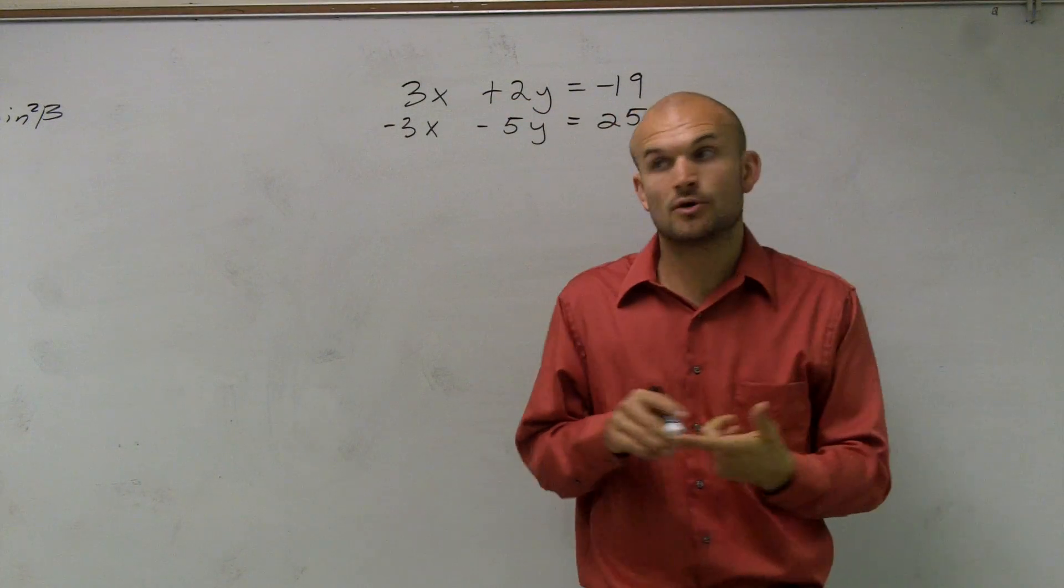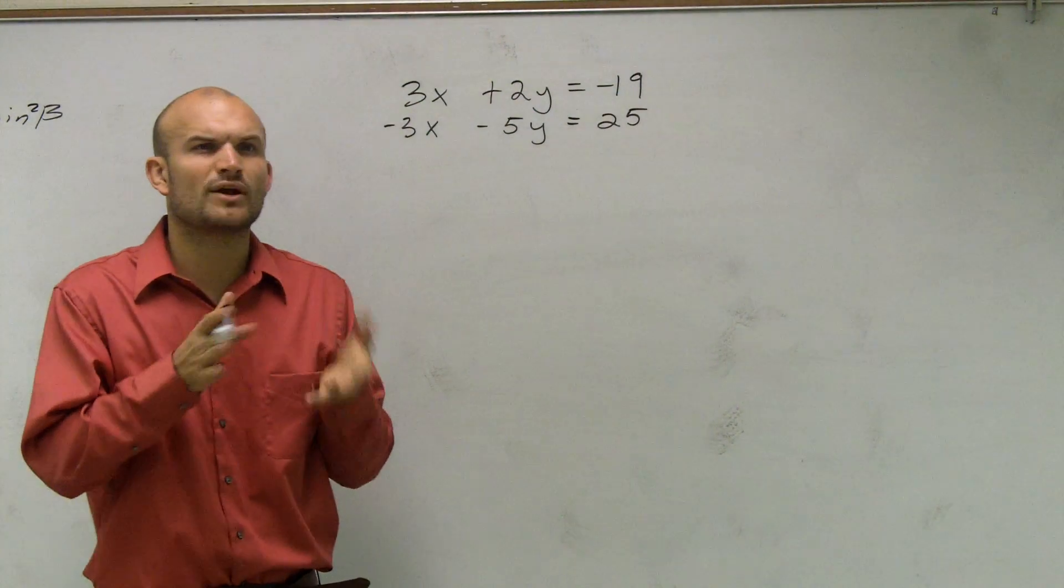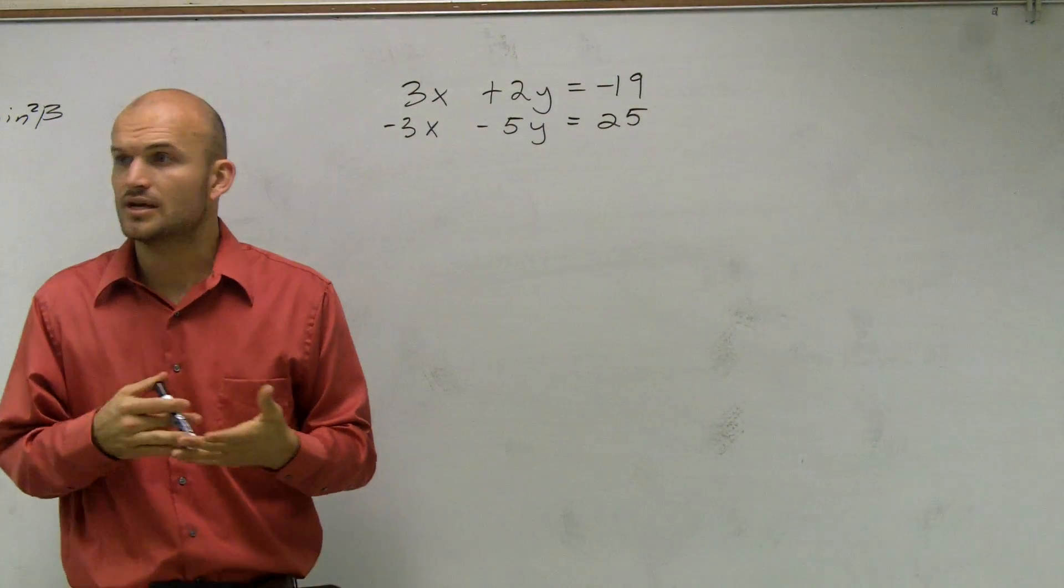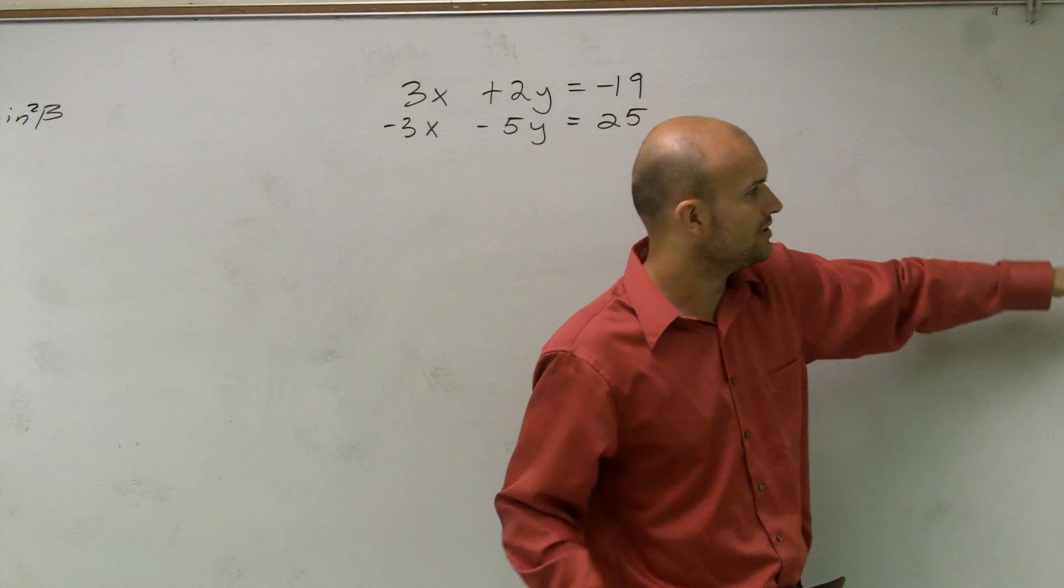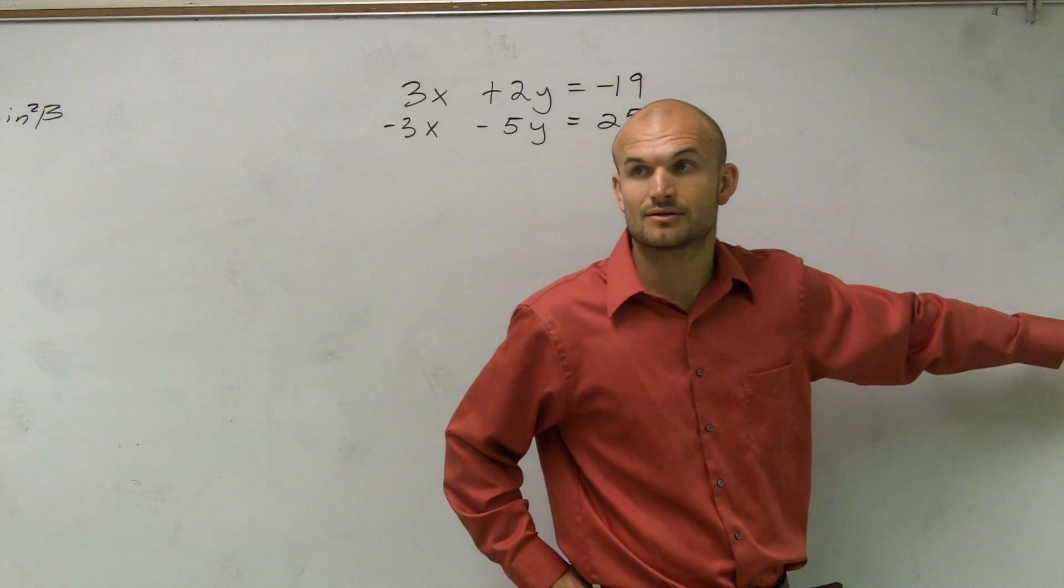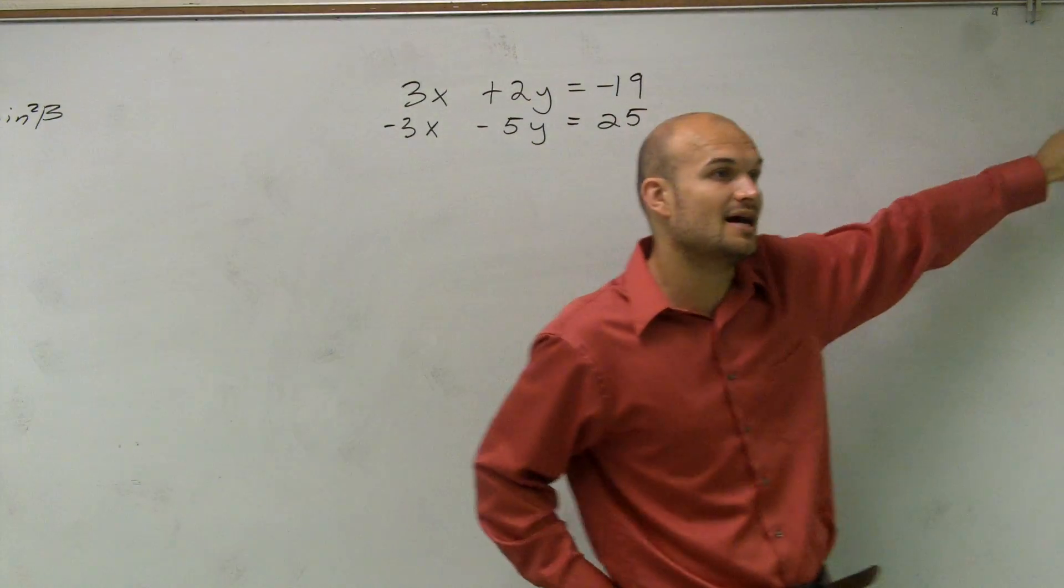So when you have the same coefficient for your variable, we can use elimination. Now, the next thing is we need to look at what are the signs of those coefficients. If the coefficients are exactly the same, we're going to use elimination of subtraction. But when the signs are opposite signs, we're going to use elimination by addition.